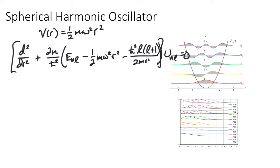With the definition of a new variable ρ just connected to the radial variable r, call this √(mω/ℏ) times r.